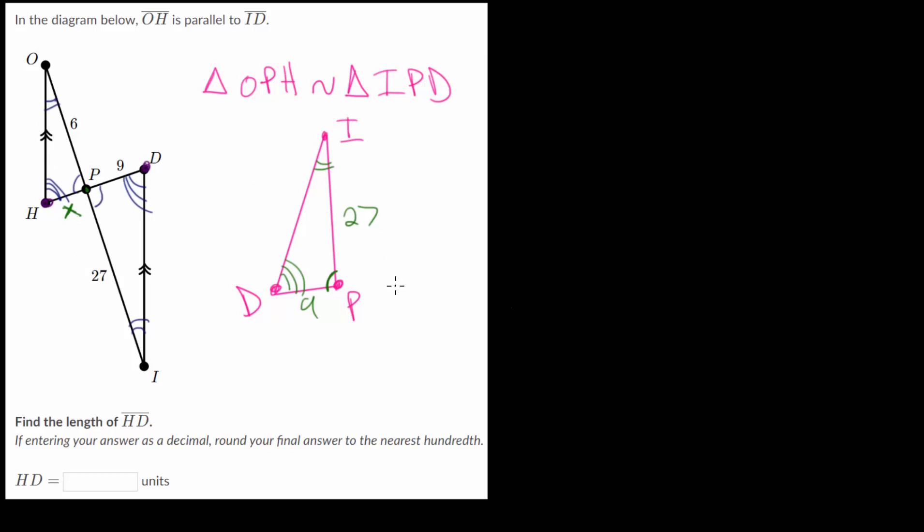And since we know these two triangles are similar, we can set up a proportionality equation to solve for this missing side length here. Since remember that when two triangles are similar, they are scaled versions of one another, meaning that if we start with a smaller triangle, we can take all of the side lengths and multiply them by the same number, that proportionality constant, so that we get the side lengths on the bigger triangle.